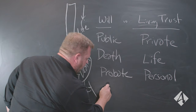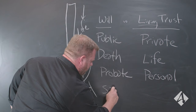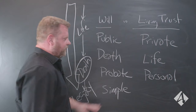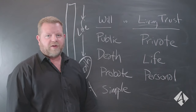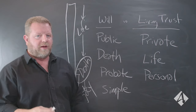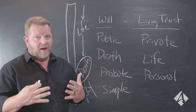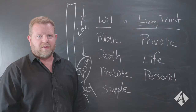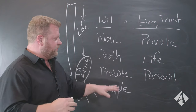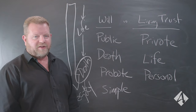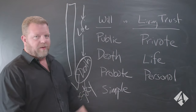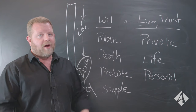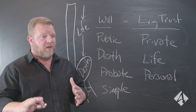Wills, however, are very simple — it's die and distribute. If something happens to me, here's who gets my stuff, here's who gets my car, here's who gets my real estate, here's who gets my business. I'm not holding it for a long period of time.